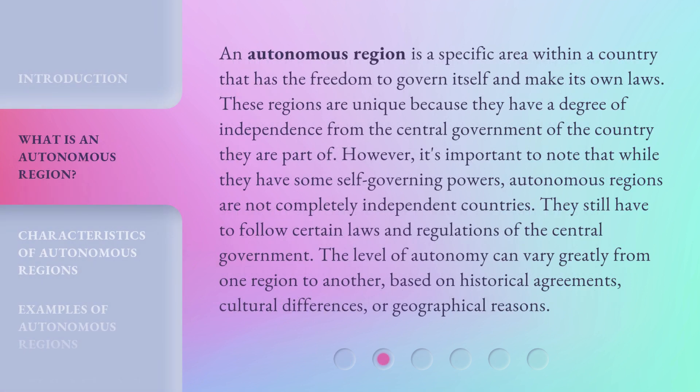An autonomous region is a specific area within a country that has the freedom to govern itself and make its own laws. These regions are unique because they have a degree of independence from the central government of the country they are part of. However, it's important to note that while they have some self-governing powers, autonomous regions are not completely independent countries. They still have to follow certain laws and regulations of the central government. The level of autonomy can vary greatly from one region to another, based on historical agreements, cultural differences, or geographical reasons.